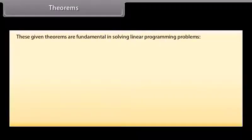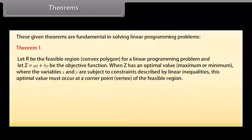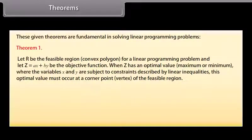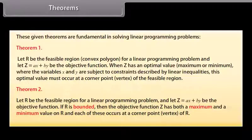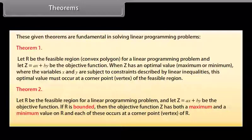Theorems fundamental in solving linear programming problems. Theorem 1: Let R be the feasible region (convex polygon) for a linear programming problem, and let Z = AX + BY be the objective function. When Z has an optimal value (maximum or minimum), where variables X and Y are subject to constraints described by linear inequalities, this optimal value must occur at a corner point (vertex) of the feasible region. Theorem 2: Let R be the feasible region and Z = AX + BY be the objective function. If R is bounded, then Z has both a maximum and a minimum value on R, and each occurs at a corner point (vertex) of R.